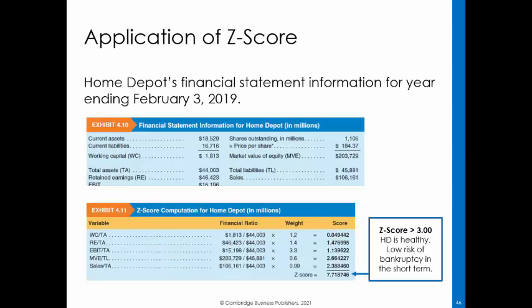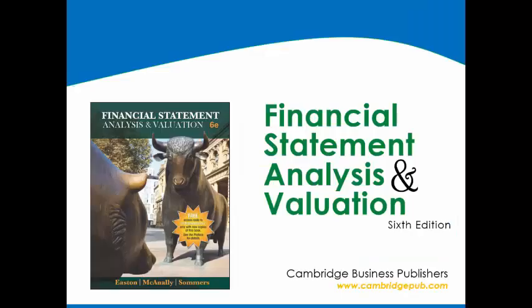This slide shows the calculation of the Z score for Home Depot based on the February 3, 2019 financial statements. Home Depot has a Z score of 7.719, which exceeds the 3.0 lower cutoff for safe companies. Thus, we conclude that there is a low risk that Home Depot would go bankrupt in the short term. And this is the conclusion of the presentation for Module 4 for Accounting 311, Financial Statement Analysis for Global Entrepreneurs.